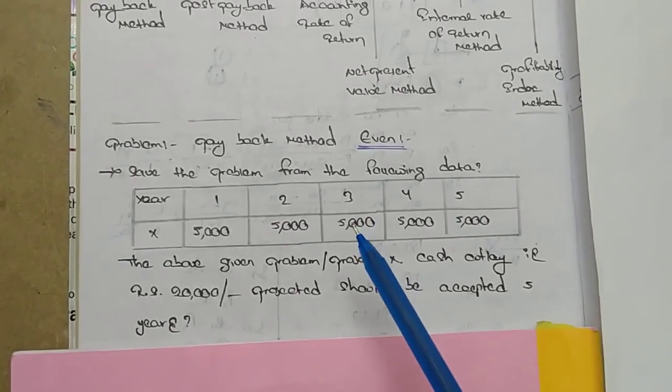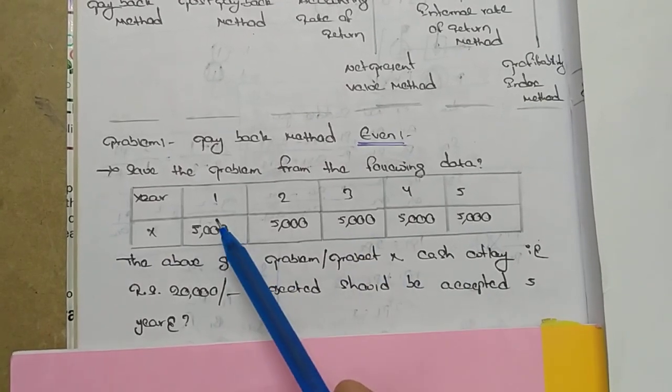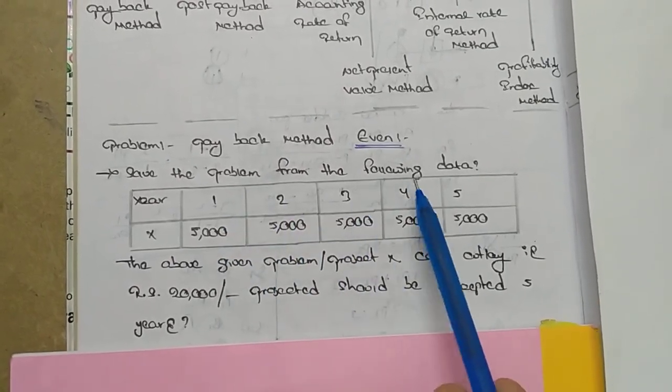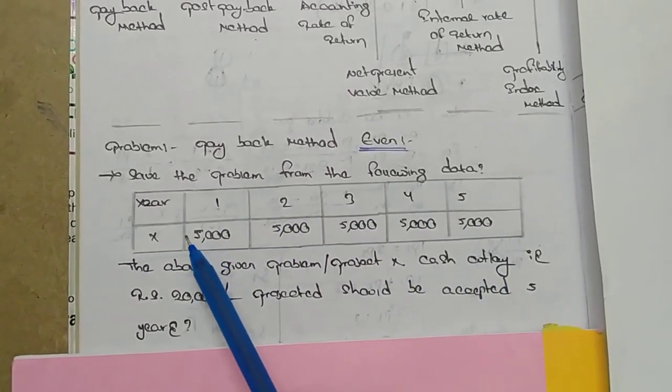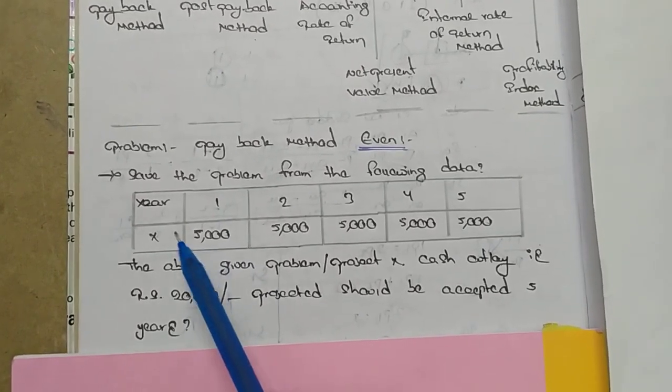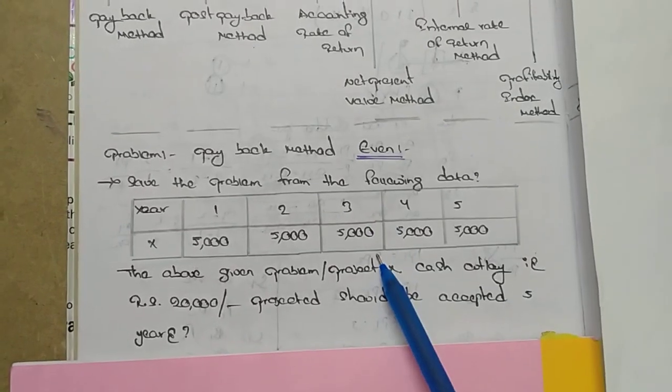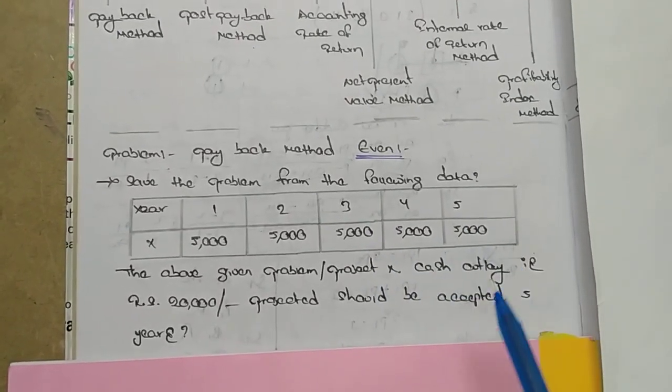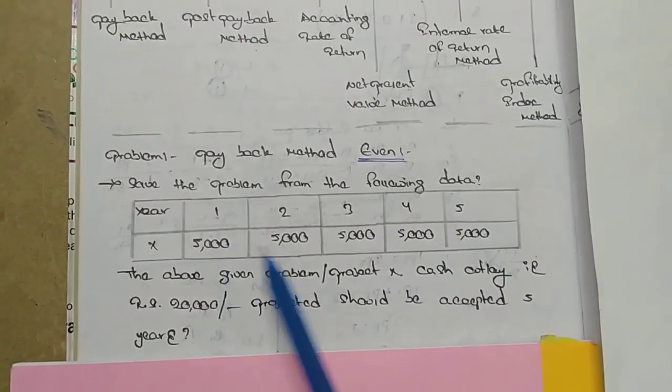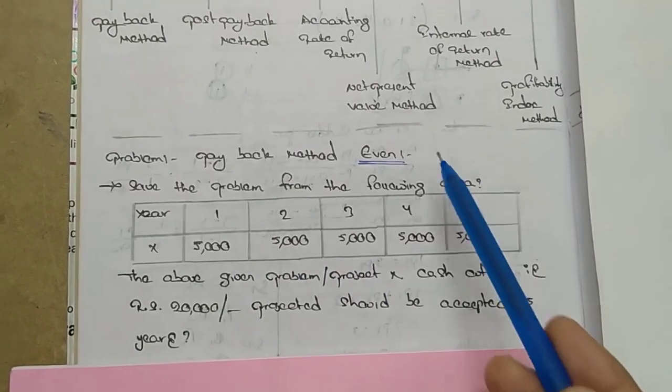Solve the problem from the following data: years 1 through 5, Project X. First year 5000, second year 5000, third year 5000, fourth year 5000, fifth year 5000. This means every year is a constant amount. That is an even problem.